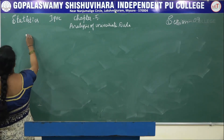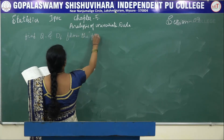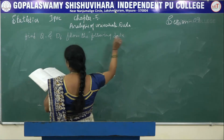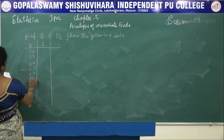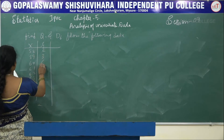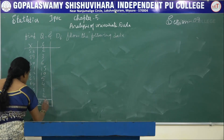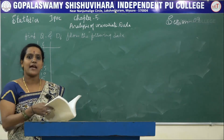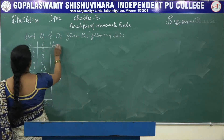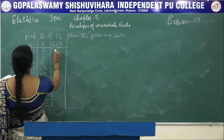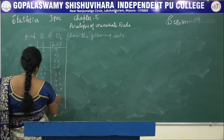Here we have to find Q1 and D6 from the following data. The X values are 58, 59, 61, 62, 63, 64, 66 with frequencies 2, 3, 6, 15, 10, 5, 4, 3, 2. First we find N = 50 and then calculate the less than cumulative frequency (LCF): 2, 5, 11, 26, 36, 41, 42, 48, 50.